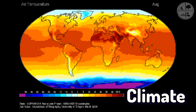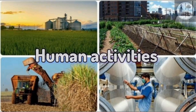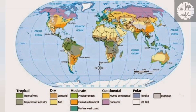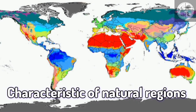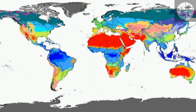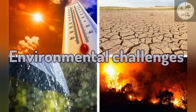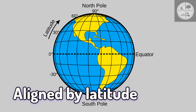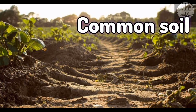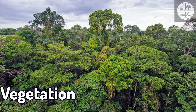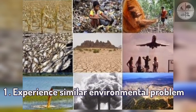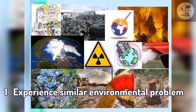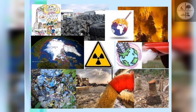Natural regions of the world. Based on climate, vegetation, and human activities, the world is divided into various natural regions, each with its own environmental and physical identity. These regions share similar environmental challenges, are aligned by latitude, have common soil and vegetation, and often support similar economic activities.